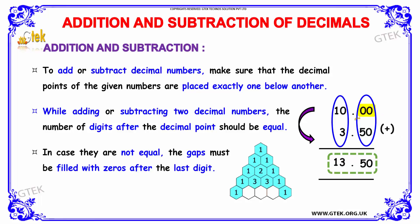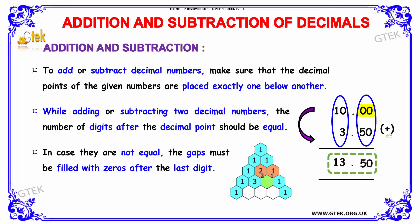For example, let us consider the given numbers 10.00 and 3.50. We have to check out whether these numbers are placed exactly one below the other. Yes, it is. Whenever we are adding or subtracting two decimal numbers, the number of digits after the decimal point should be equal. In both cases, we have 0.00 in the first term and 0.50 in the second term, so it is equal.